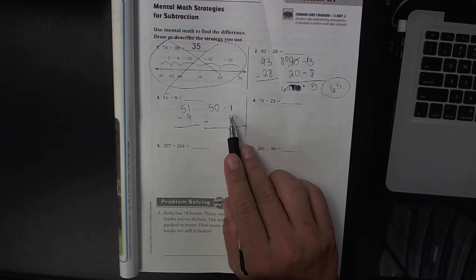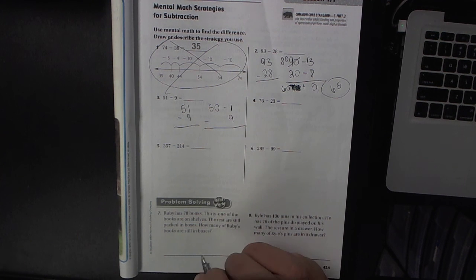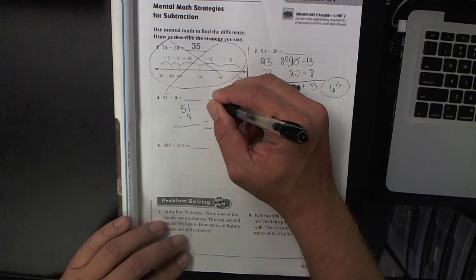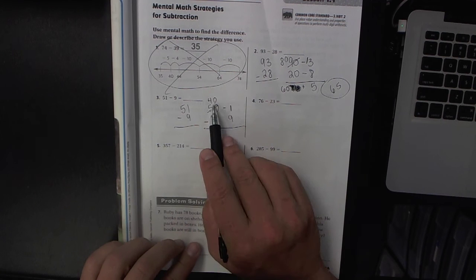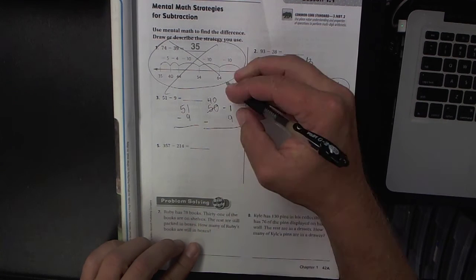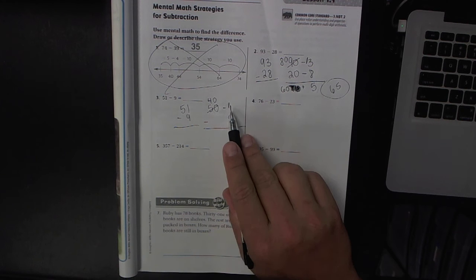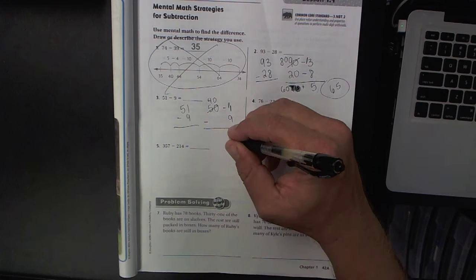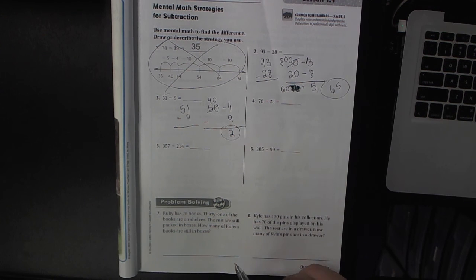And you can see, just like last time, you want to start on the right-hand side in case you need to borrow. I need to borrow from the 50, that becomes 40, so I'm taking away 10 and moving it over here. 10 plus 1 is 11, so 11 minus 9 is 2, and that's your final answer.